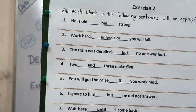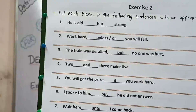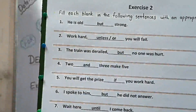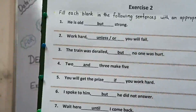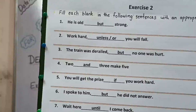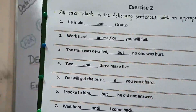Now let's come to the second part of the exercise. Here we have to fill each blank of the following sentences with an appropriate conjunction. First: he is old but strong. I have used 'but' because two contrasting sentences are there — he is old but in spite of that he is strong. Second: work hard, or/unless you will fail. You can write both answers because both give either choices or conditions.